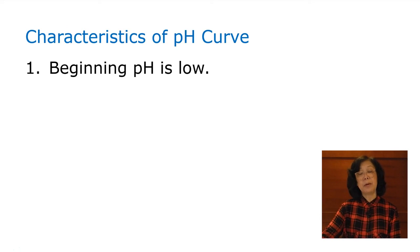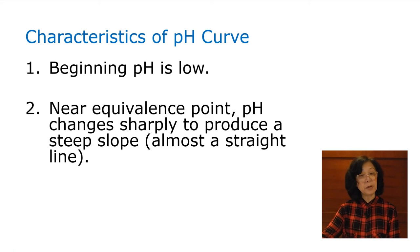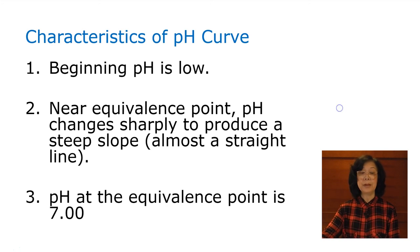To reiterate, beginning pH is low at 1. Near-equivalence point pH changes sharply to produce a very steep slope, almost a straight line. pH at the equivalence point is 7.